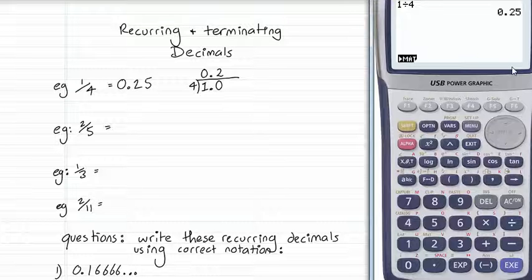2 times 4 is 8, so I've got a remainder of 2. Put down the 2 and another 0, and 4 into 20 goes 5 times. So you'll see that we got our answer of 0.25 both with the calculator and checking with the written algorithm.